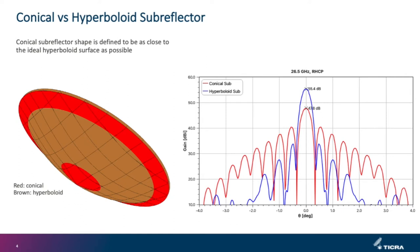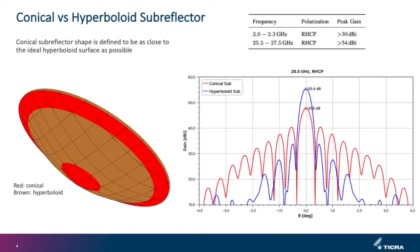For the specific design, we consider some representative frequency ranges. In S-band, we need a peak gain larger than 30 dBi between 2 to 2.3 GHz. And in KA-band, a peak gain larger than 54 dBi between 25.5 to 27.5 GHz.